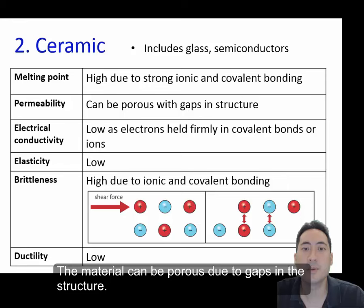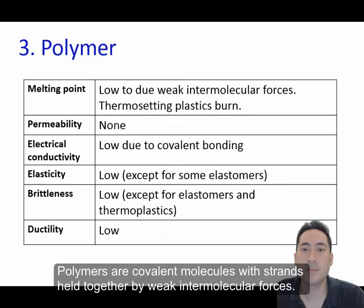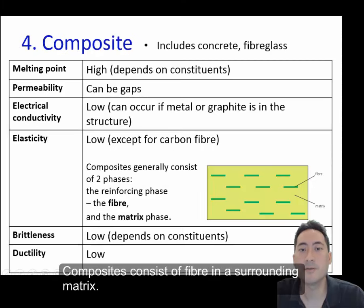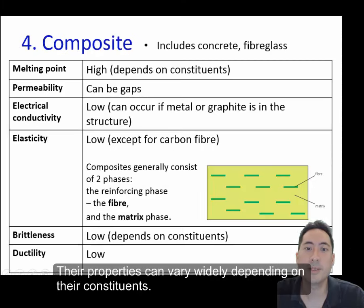The material can be porous due to gaps in the structure. Polymers are covalent molecules with strands held together by weak intermolecular forces. Hence, they have low melting and boiling points. Composites consist of fibre in a surrounding matrix. Their properties can vary depending on their constituents.